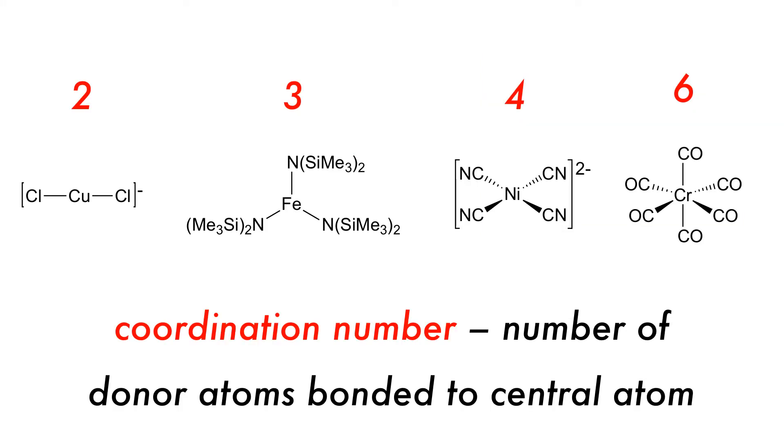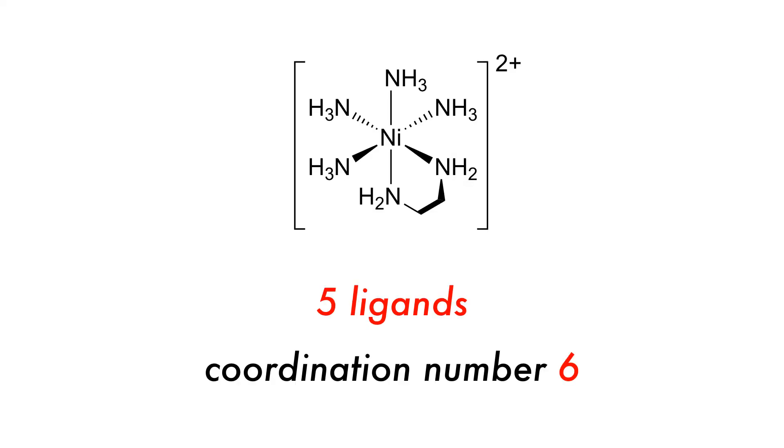The number of dative covalent bonds formed describes the coordination number, so in the complexes shown we have two, three, four, and six. If we go back to our previous example, we have five ligands here, but still have a coordination number of six, as we can get two bonds from the bidentate ligand ene, and four from the monodentate ligand ammonia.